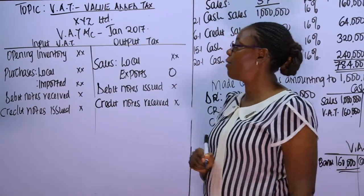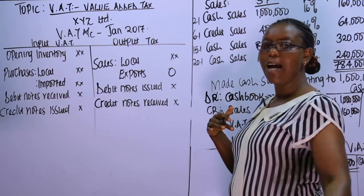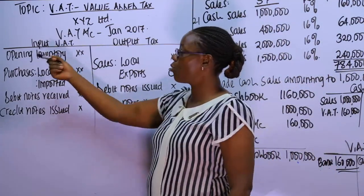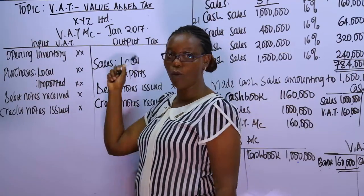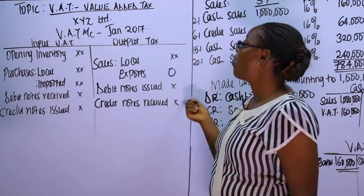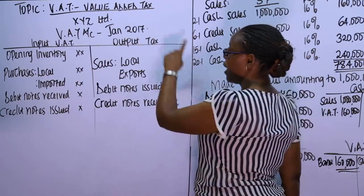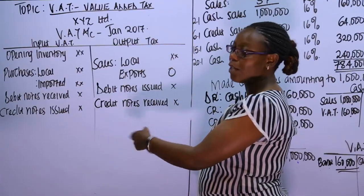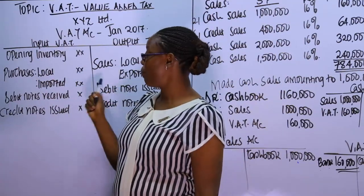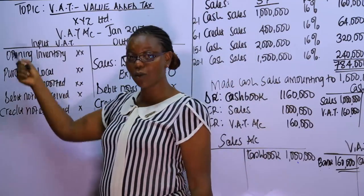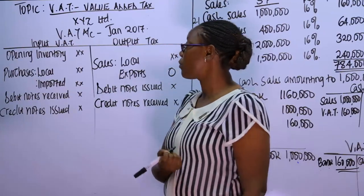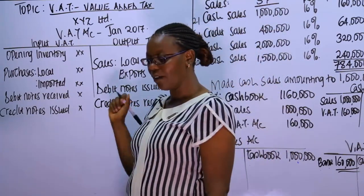If a business had over-declared VAT in the previous period, that over-declaration goes to the input side to reduce the amount you pay. Any transaction on the output side increases the amount payable to the commissioner, as it reflects money collected on behalf of the commissioner. Any transaction on the input side reduces what is remitted, representing amounts already paid.